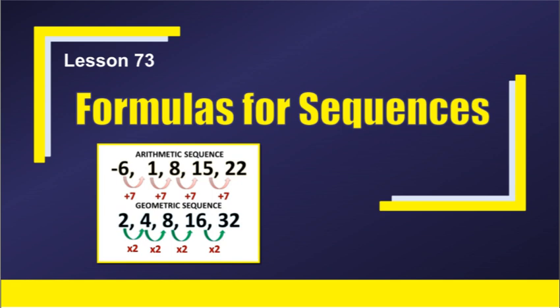Lesson 73: Formulas for Sequences. Here we have two different types of sequences: arithmetic sequences and geometric sequences. As a review, in an arithmetic sequence you are adding the same number each time between each term. With geometric sequences, you are multiplying the same number each time between each term.